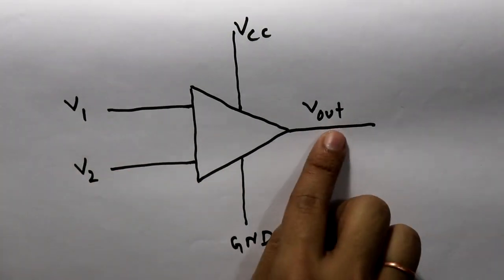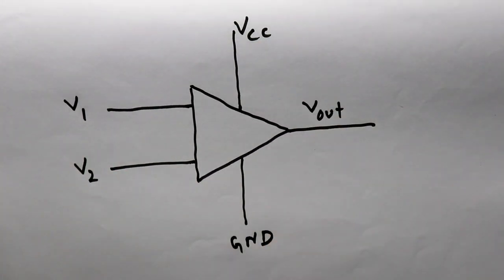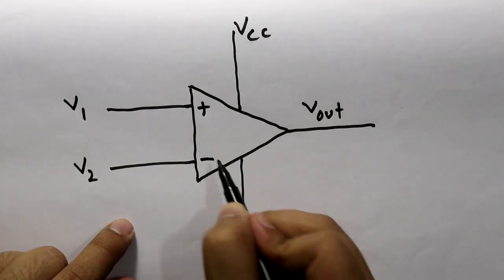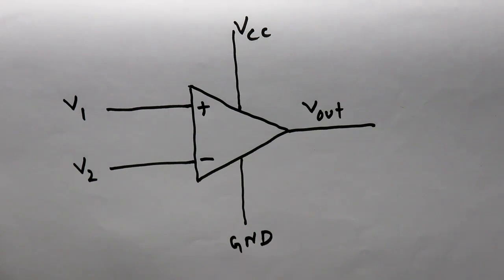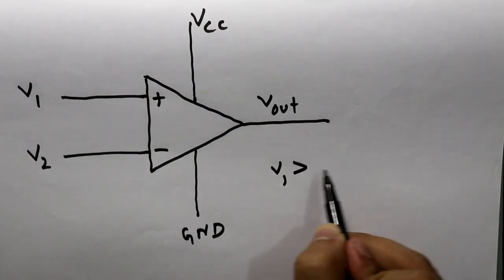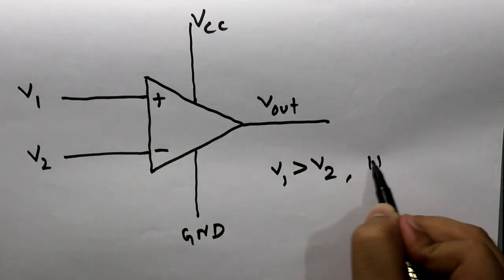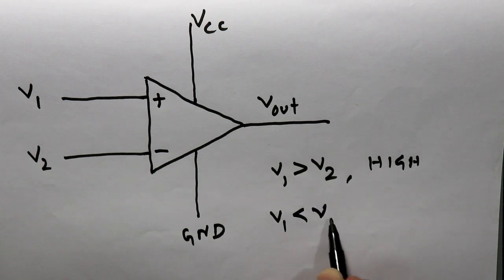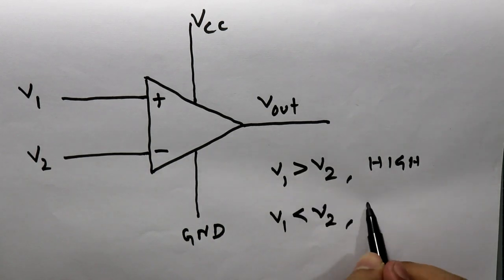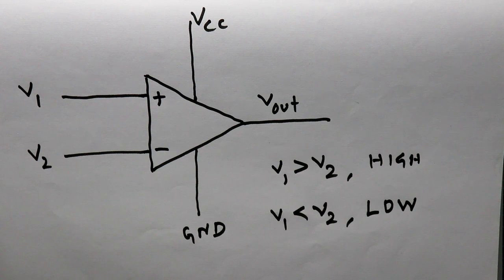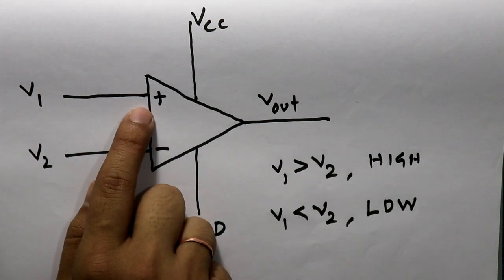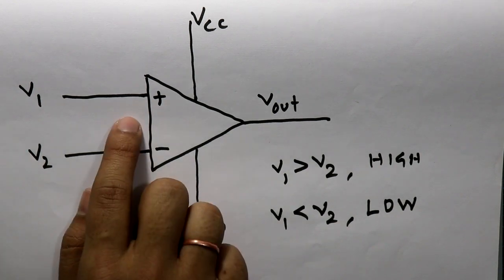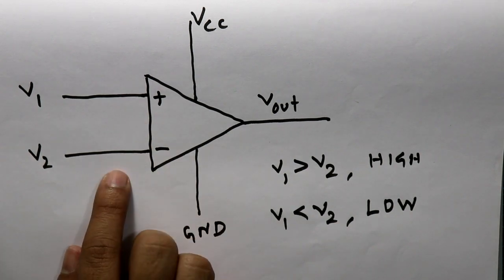These three are functioning pins and these two are power supply pins. One input pin is the non-inverting pin and the other one is the inverting pin. If V1 is greater than V2 then our output will be high, and if V1 is less than V2 then our output will be low. Which means if the non-inverting voltage is less than the inverting voltage then output will be low, and if the non-inverting pin voltage is higher than the inverting pin voltage then output will be high.